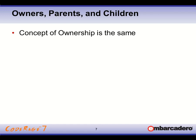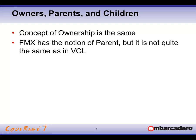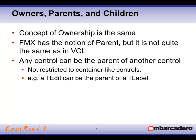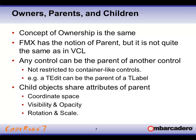Owners, parents, and children follow the same concept of ownership — if a control owns another, it takes care of cleaning it up. Parenting is also available in FireMonkey, but it doesn't deal directly with a window handle like the VCL parent does. Any control can be the parent of another control. For example, you could have an edit be the parent of a label. Properties that affect the parent also affect the children: if you hide a parent, all children are hidden. If you change the parent's opacity to 0.5, all children's opacity changes as well.